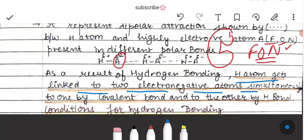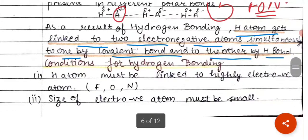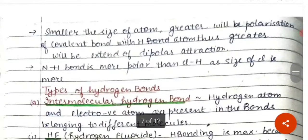As a result of hydrogen bonding, hydrogen gets linked between electronegative atoms — one by a covalent bond and the other by the hydrogen bond. Conditions required for hydrogen bonding: the hydrogen atom must be linked to a highly electronegative atom; the size of the electronegative atom must be small. The smaller the size of the atom, the greater will be the polarization of the covalent bond with the hydrogen atom, and thus greater will be the extent of the dipolar attraction.